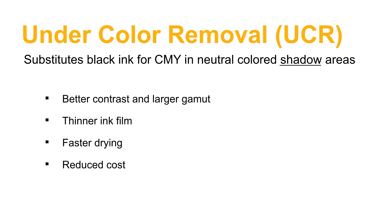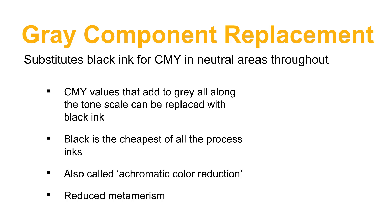UCR — undercolor removal — is a process for achieving better contrast and a larger gamma in our print, while at the same time using less ink, which in turn dries faster and costs less. The way it works is we substitute black ink for the other colors in shadowed areas that are already neutral. The next iteration, increasing the complexity but also the benefits, is called gray component replacement or GCR, which substitutes black for those three process colors in neutral areas throughout the entire image, rather than only in the shadow areas.